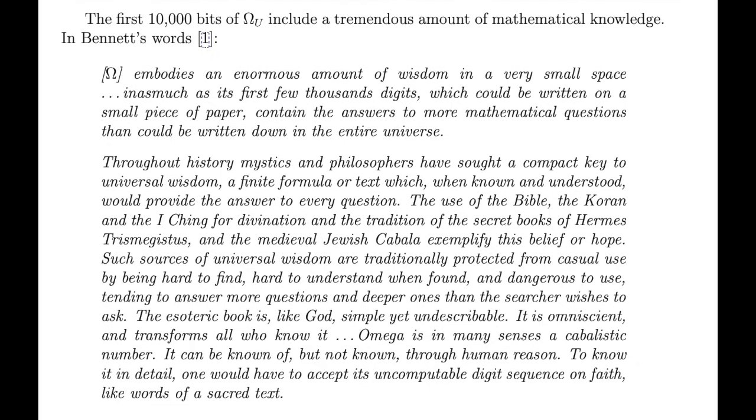Omega is in many senses a cabalistic number. It can be known of, but not known, through human reason. To know it in detail, one would have to accept its uncomputable digit sequence on faith, like words of the sacred text.